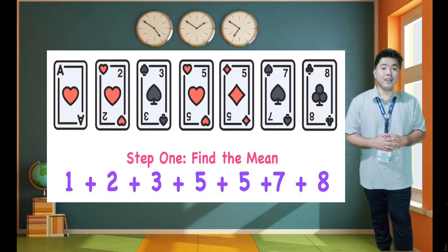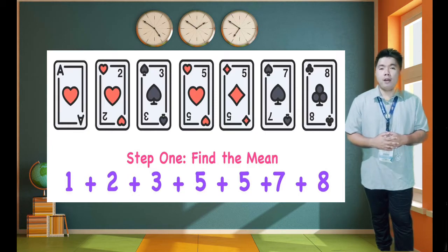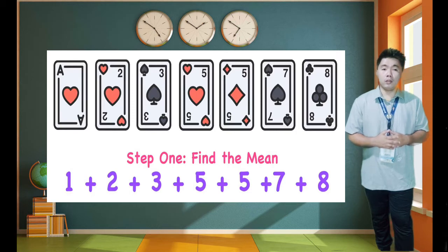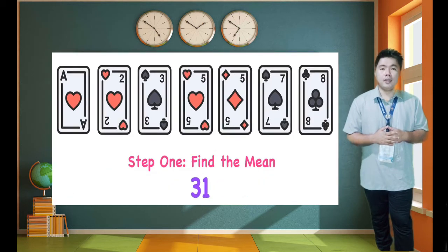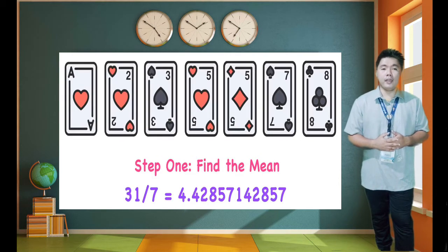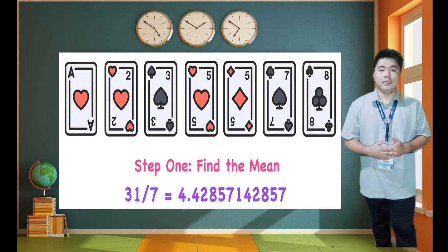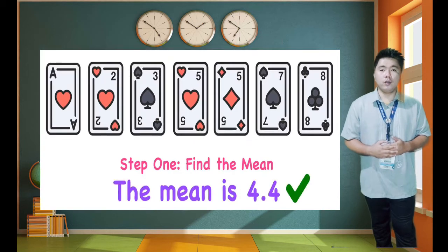Let's start by finding the mean. The total of those 7 cards is 31. To get the mean, we need to divide 31 by the number of cards, which is 7. So, 31 divided by 7 is equal to 4.43. The mean of those 7 cards is equal to 4.43.